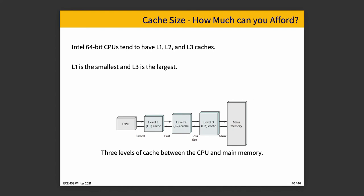Intel and AMD 64-bit CPUs tend to have Level 1, 2, and 3 caches, with L1 being the smallest and L3 being the largest. These are not to scale in the diagram — they are dramatically different in practice. Looking at the specification of a modern CPU, for example the Ryzen 5600X: the Level 1 cache is about 512K, the Level 2 cache is about 3 megabytes, and the Level 3 cache is about 32 megabytes.